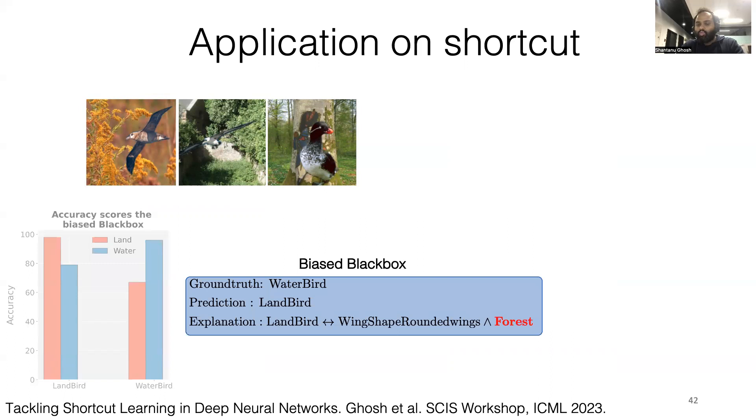Then, we extract the interpretable model from the biased black box. Here, we see that the spurious concept forest pops up in the FOL explanation for a water bird classified as a land bird.